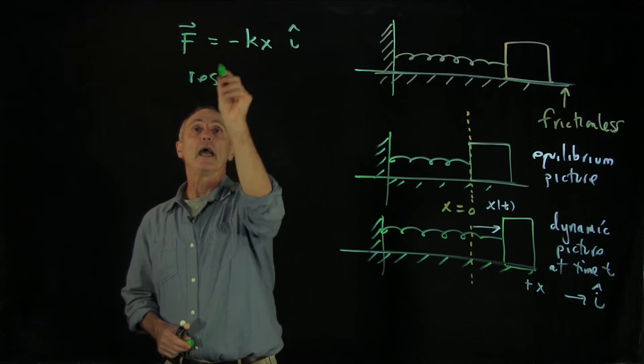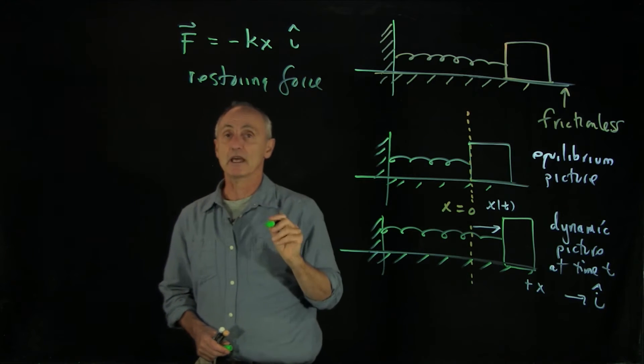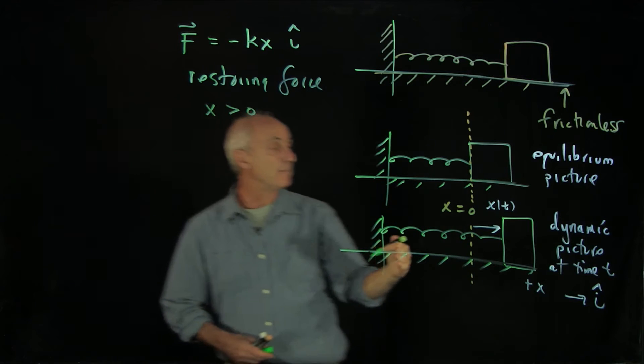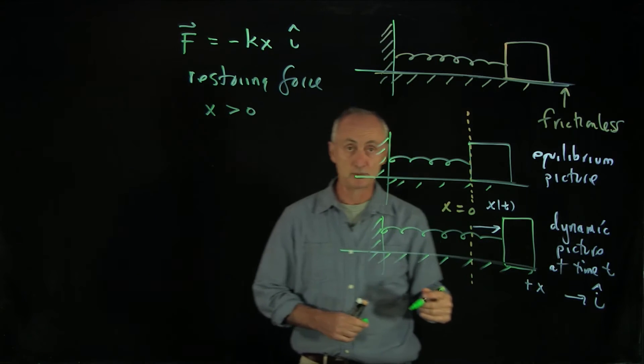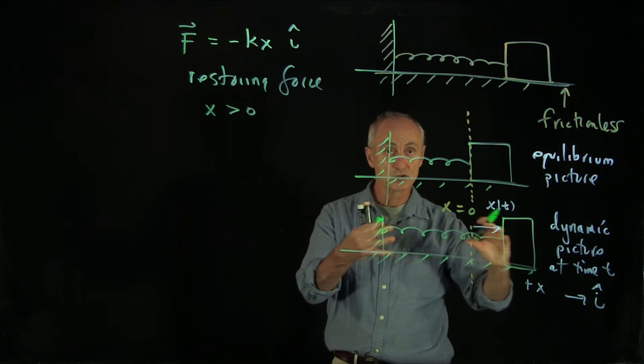Well, this is an example of what we call a restoring force. Let's look at a couple of examples. When x is positive, that means the object has been pulled out from the equilibrium position. The spring is undergoing tension, it's being stretched apart.